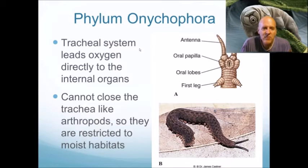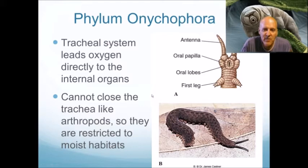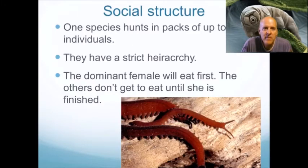Velvet worms have a tracheal system that leads oxygen directly to the internal organs, much like insects. They have spiracles — little holes along the body — that lead to tubes bringing oxygen in. However, most arthropods can close their trachea, while Onychophora cannot. This means they lose a lot of moisture, which is why they can only live in moist habitats.